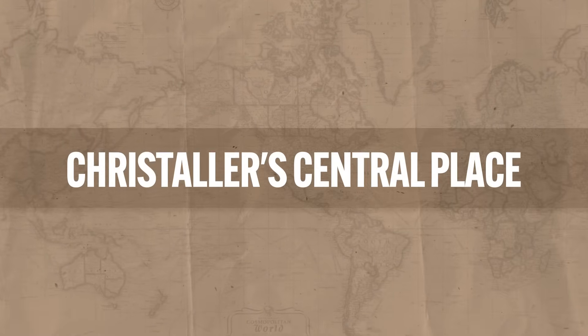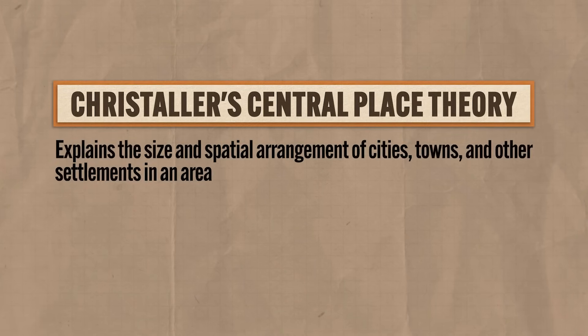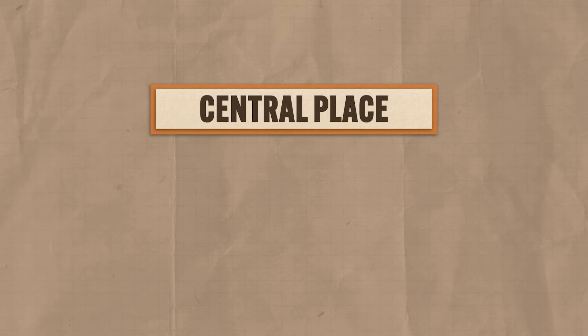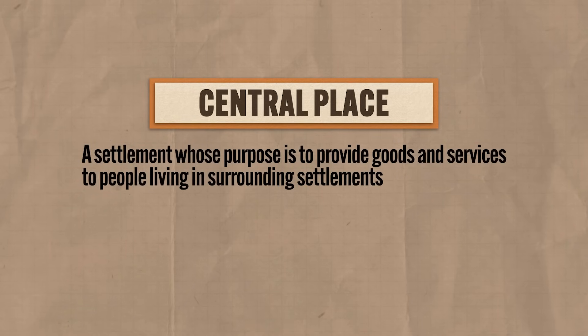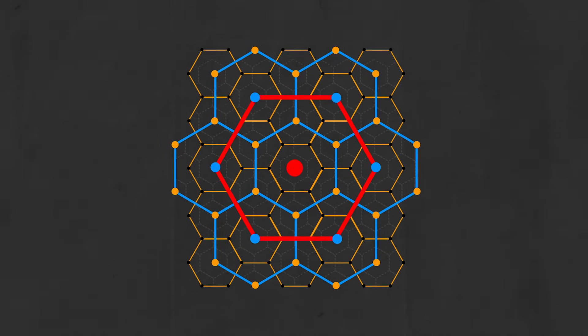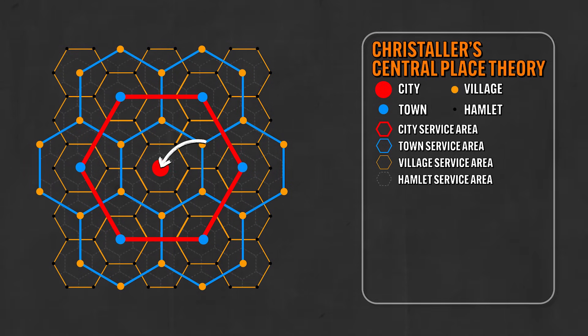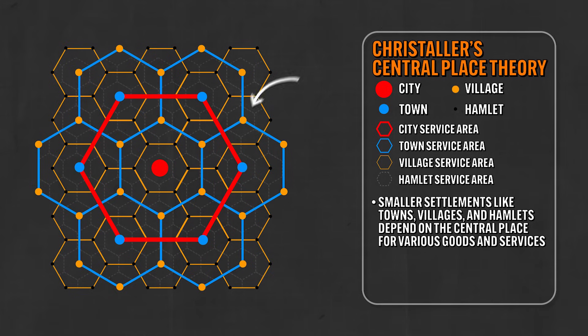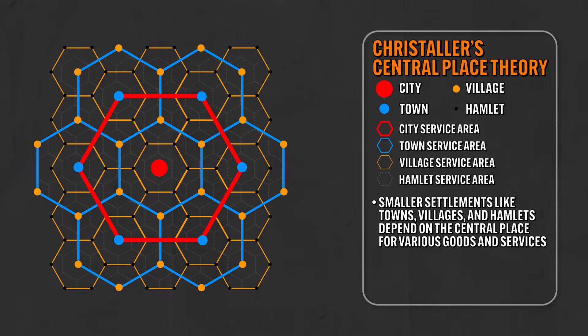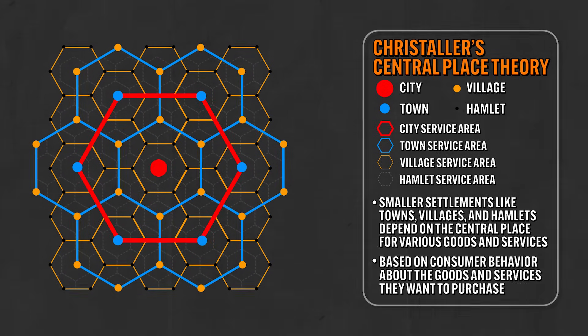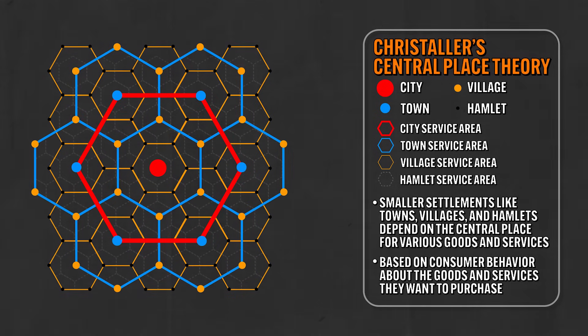Now it's time for Christaller's central place theory, which explains the size and spatial arrangement of cities, towns, and other settlements in an area. A central place is a settlement whose purpose is to provide goods and services to people living in surrounding settlements — essentially a city. Christaller laid out his theoretical framework in a series of hexagons, with the central place in the middle and a hierarchy of smaller settlements like towns, villages, and hamlets radiating out, depending on the central place for various goods and services. The arrangement is based on consumer behavior about goods and services.